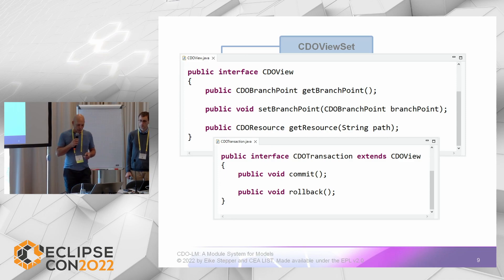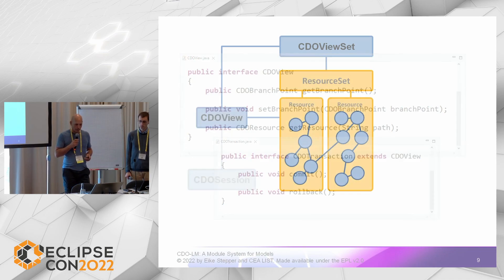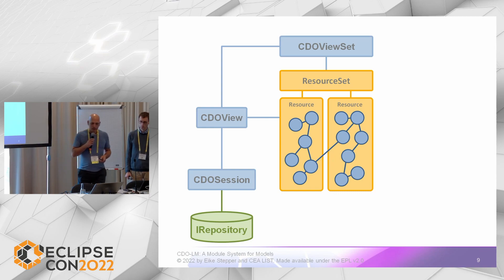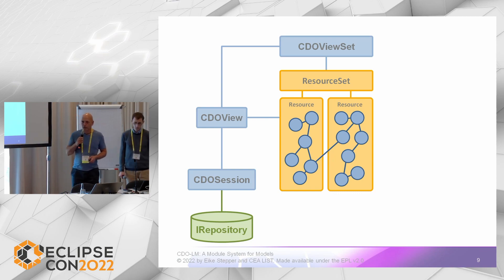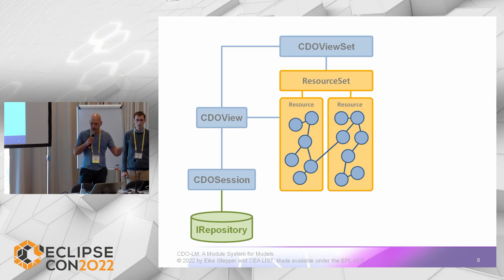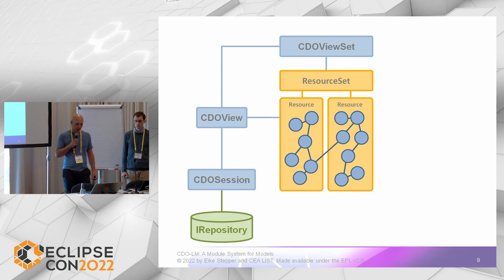The models, the object graphs you receive from the view, are read-only unless you use a subinterface of view called the CDO transaction. With the CDO transaction, the object graph is writable — you can call setters, mutate the lists, call commit on the transaction, or roll it back. A view itself is not directly connected to the repository; the physical network connection is managed by a CDO session, which connects to the external CDO repository.